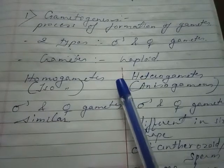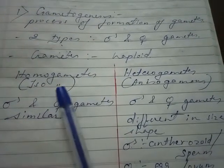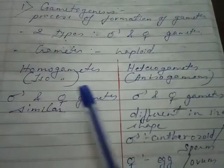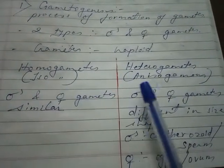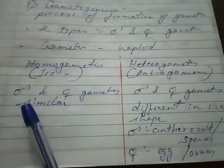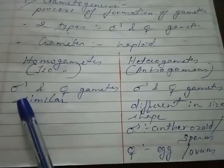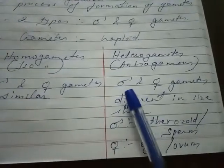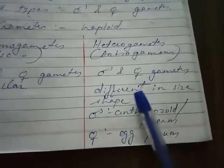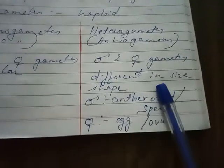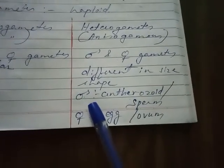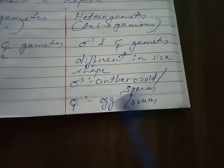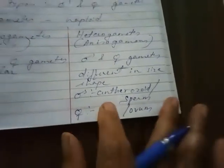Depending upon the shape and structure, we can classify gametes into two types: homogametes (isogametes) and heterogametes (anisogametes). In homogametes, male and female gametes are similar. In heterogametes, male and female gametes differ in size and shape. Male gametes are called antherozoids or sperm, and female gametes are called egg or ovum.